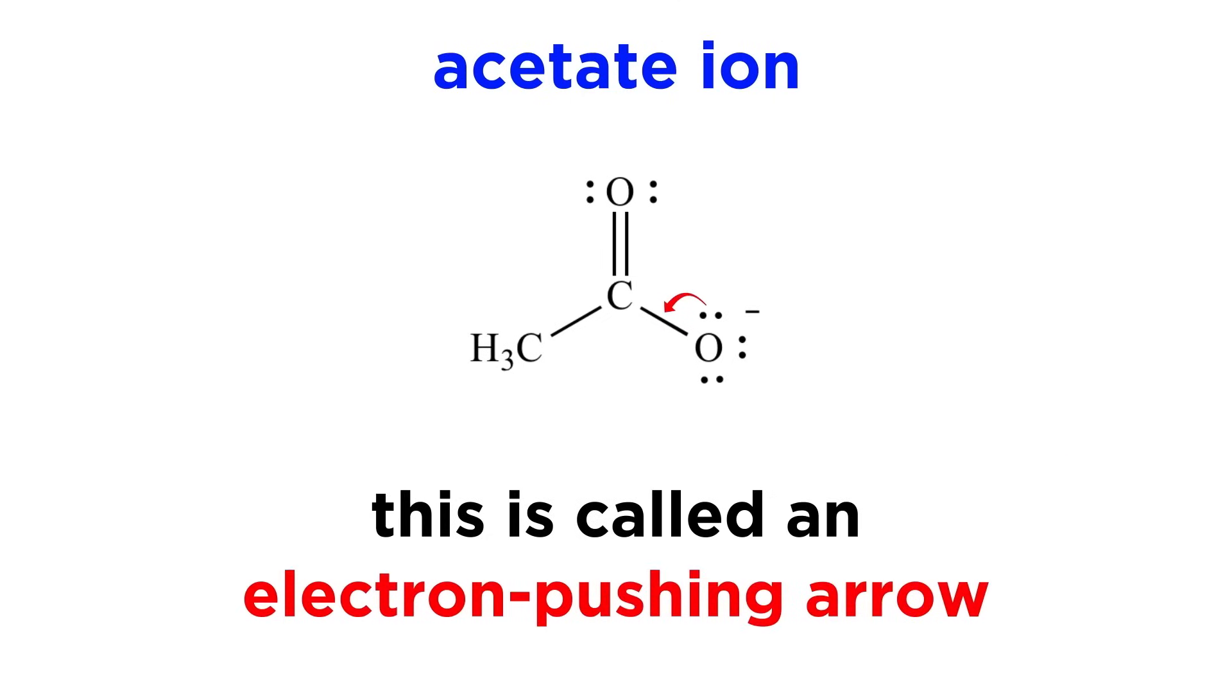Using an electron pushing arrow, we can depict electron flow by pushing one of these lone pairs down here to form a pi bond between oxygen and carbon. This would give carbon 5 bonds, which is impossible.